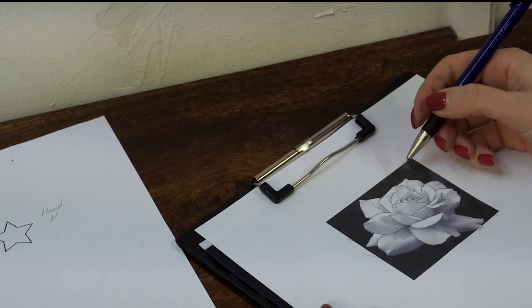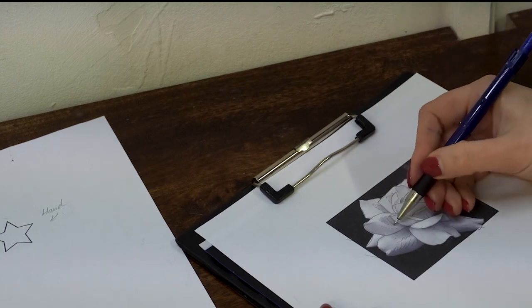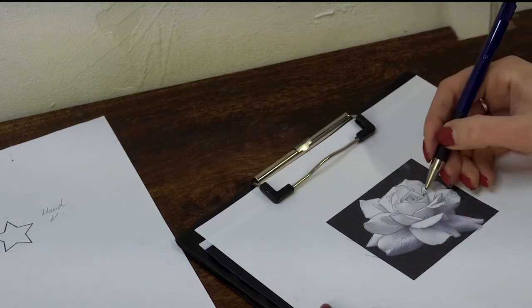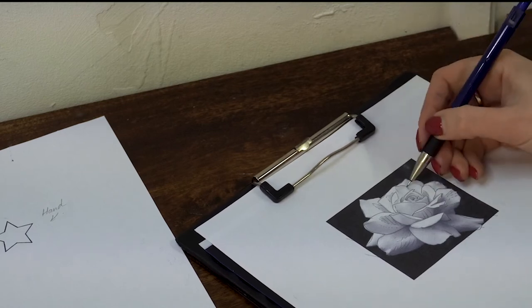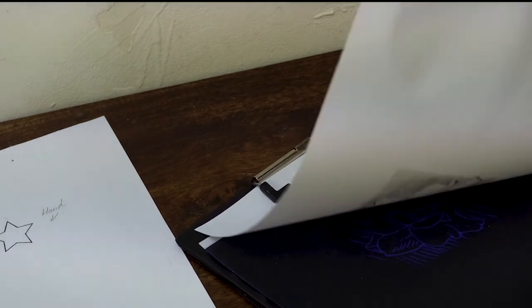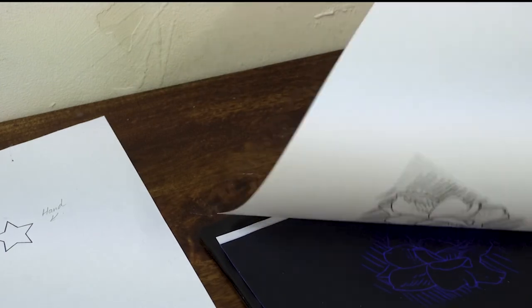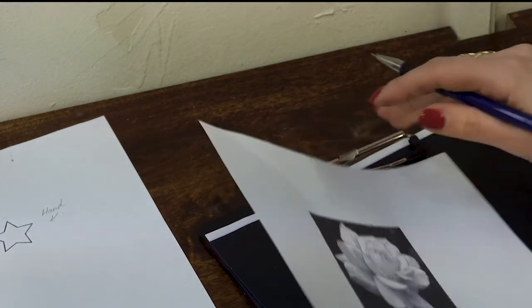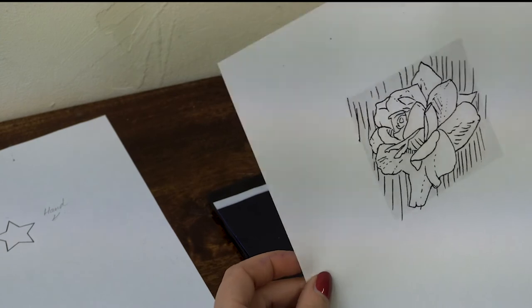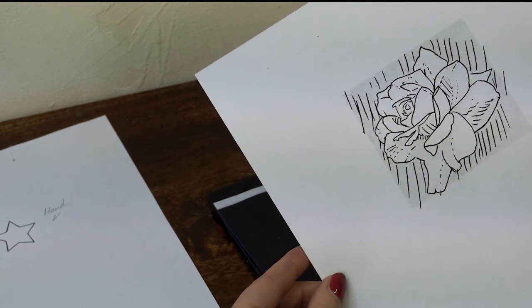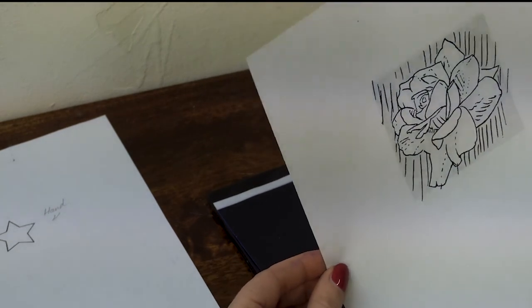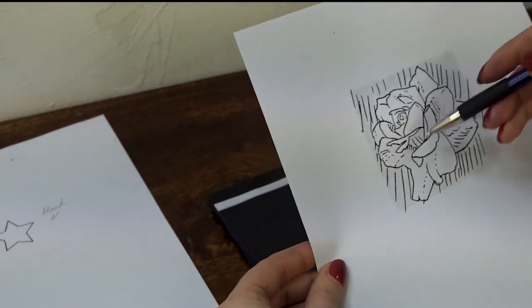As you can see on the back of the stencil, it's clear where the background is, there's lots of lines. On the not-so-dark parts on the petals, I only left the dots to show myself where the shadow finishes.